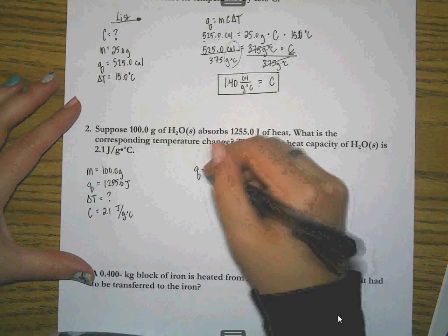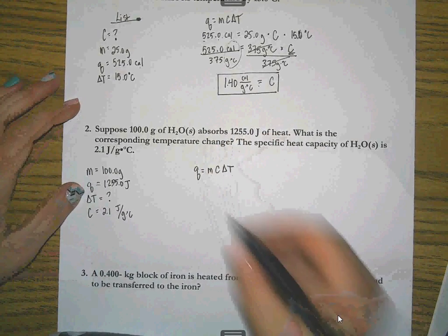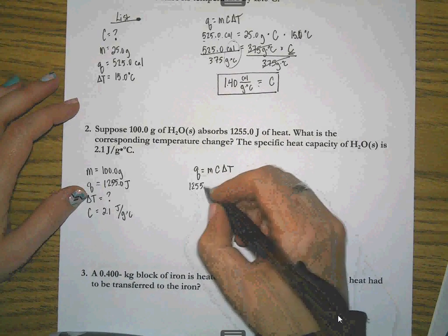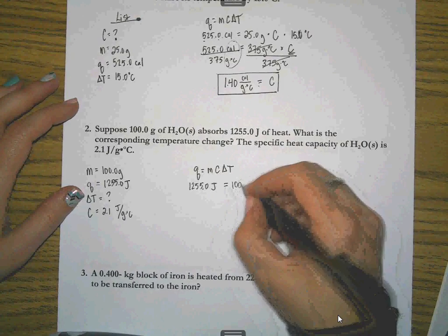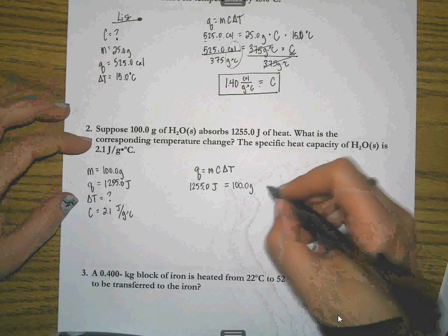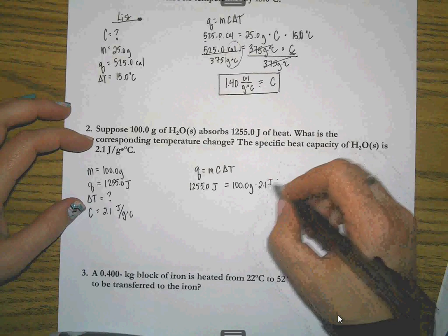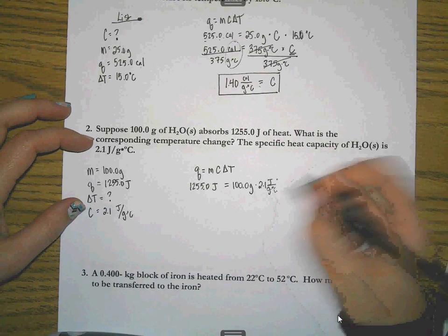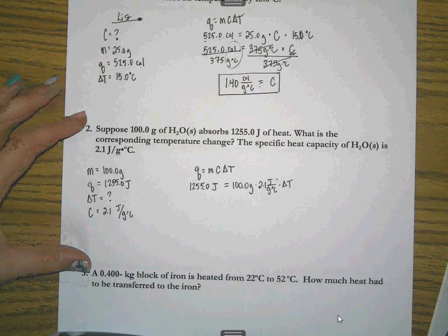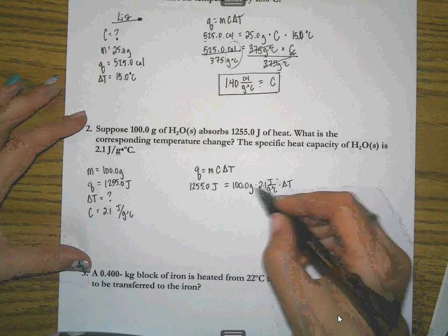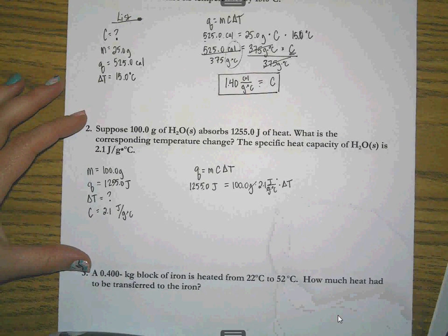So again, here's my formula. Q is equal to MC delta T. My Q is 1255.0 joules. My M is 100 grams. My C is 2.1 joules over grams degree Celsius. And delta T is what I want to find. Well, if you look over here, my grams will cancel out, which leaves me with joules over degrees Celsius.